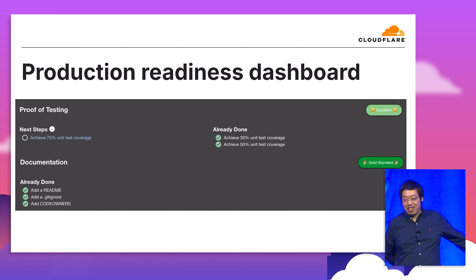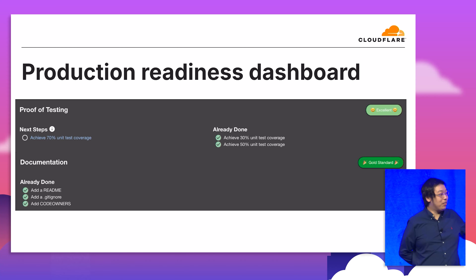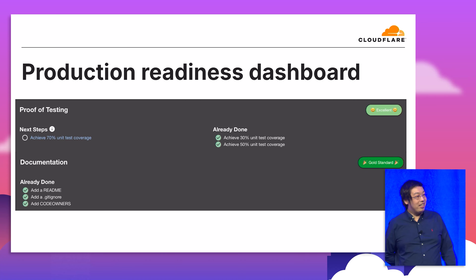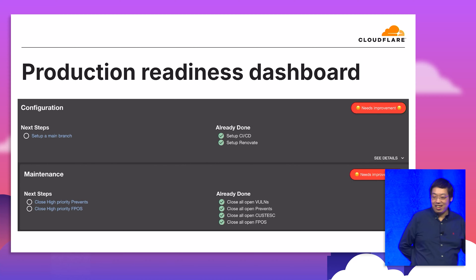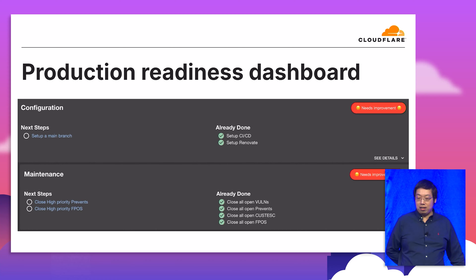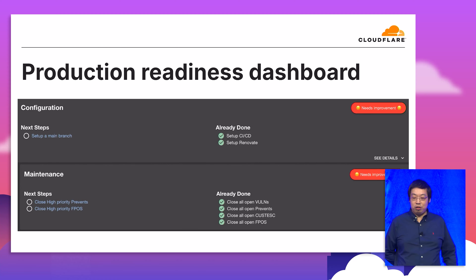Here is the final result of our Software Excellence Dashboard. You can see all your checks — like whether you have README files and CI/CD pipelines — and it gives you a score showing how good your repository is. If you hover over the question marks on the UI, it gives you suggestions telling the developer what they could do to improve.